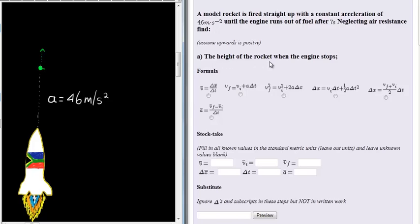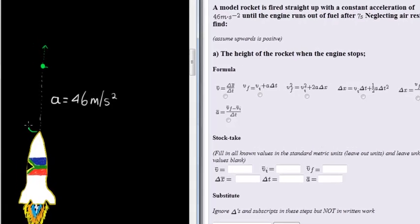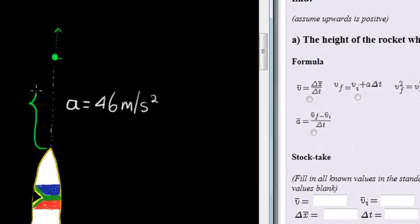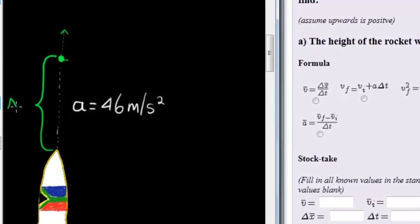They want to know the height of the rocket when the engine stops. In other words, if we were to measure this distance that it traveled when the engine stopped, what is that height? In other words, that's delta X that we need to calculate.